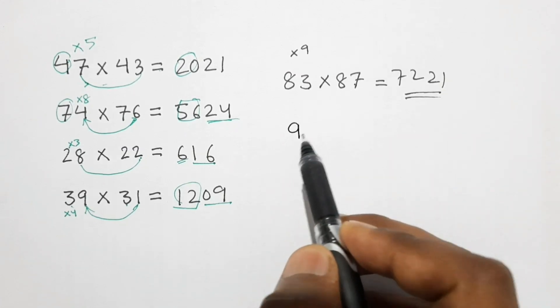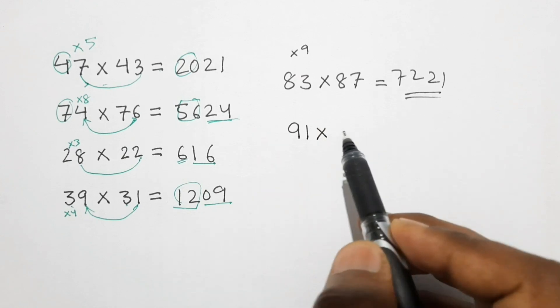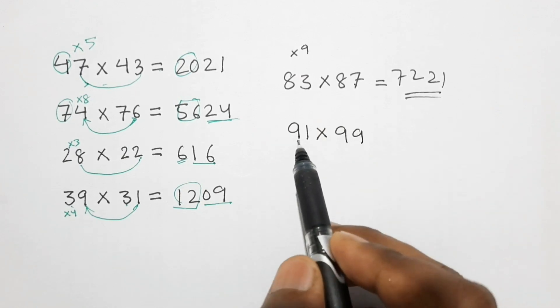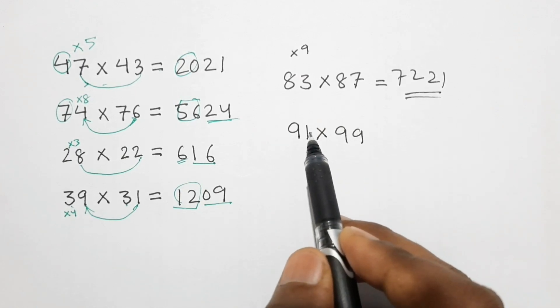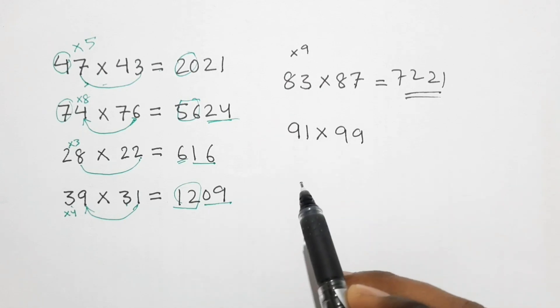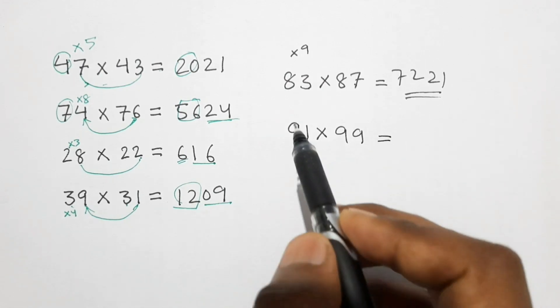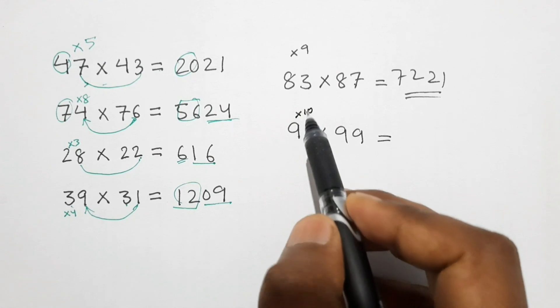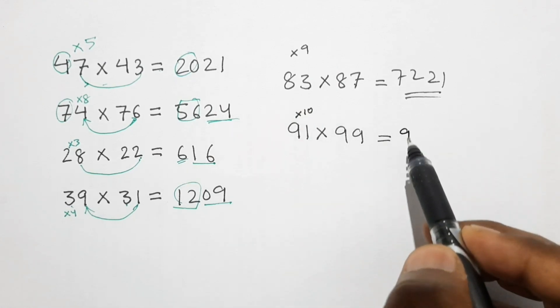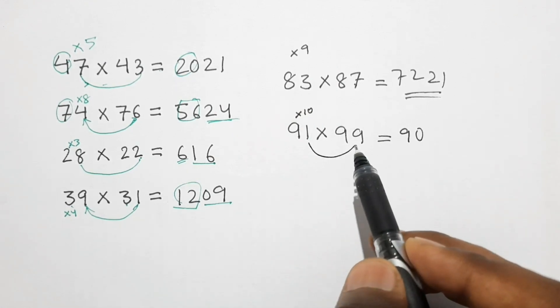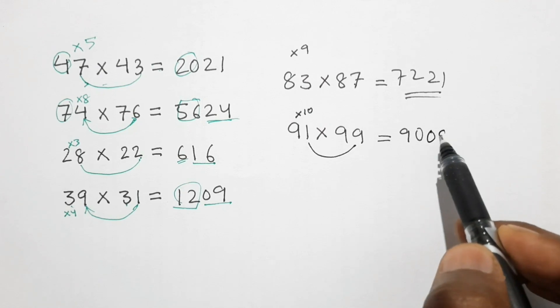Similarly another number, let's take 91 into 99. Here also tens digits same and sum of units digits is 1 plus 9 equals 10. So here also we multiply 9 into 10. 9 times 10 is 90, and here 1 into 9 is 9, we write 09.